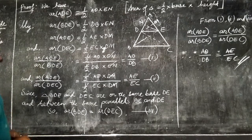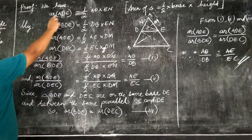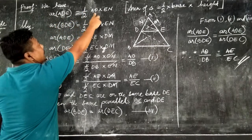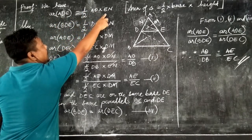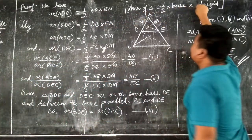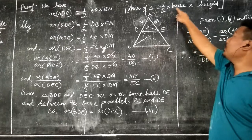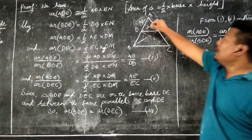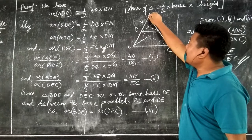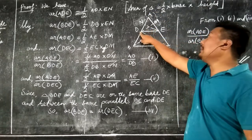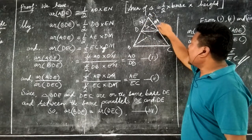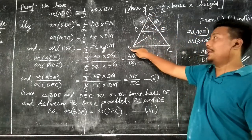Now we have area of triangle ADE equal to half into AD into EN. This area of the triangle is taken using the formula: area equals half into base into height. In triangle ADE, we are taking AD as the base and EN as the height, because EN is perpendicular to AB.